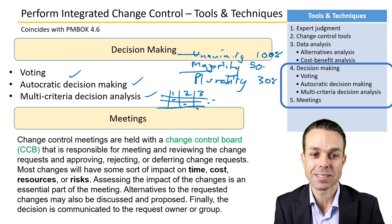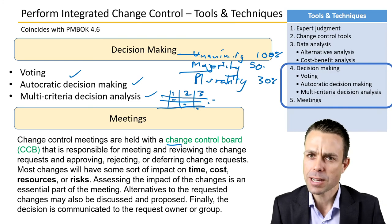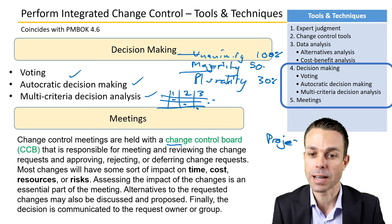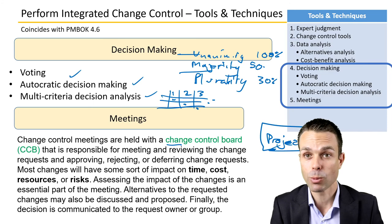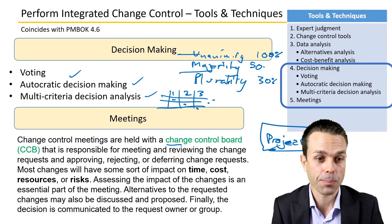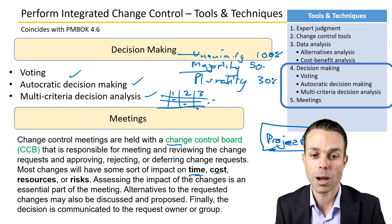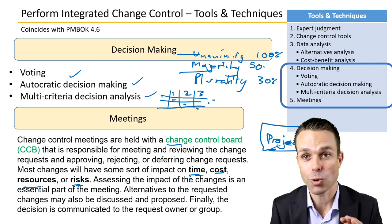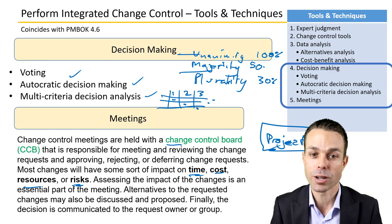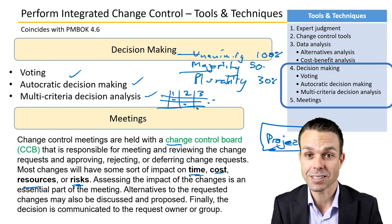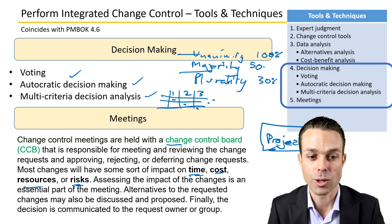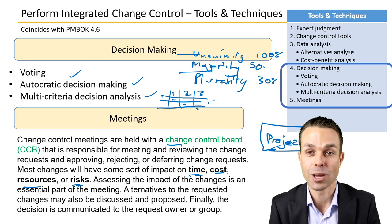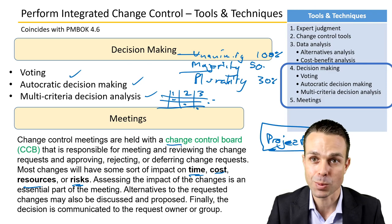Change control meetings are held with the change control board — or if there isn't one, the project sponsor or whoever is managing those changes, depending on what was agreed when initiating the project. Most changes will have some impact on time, cost, resources, or risks, so assessing the impact of those changes is an essential part of the meeting. Alternatives to the requested changes may also be discussed and proposed. Finally, the decision is communicated back to the request owner or group who requested that change.